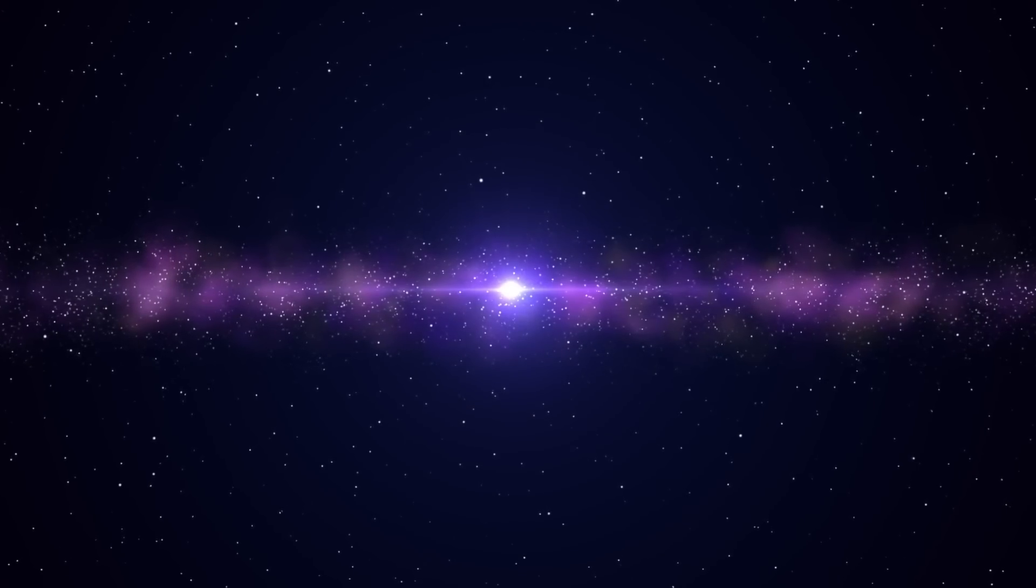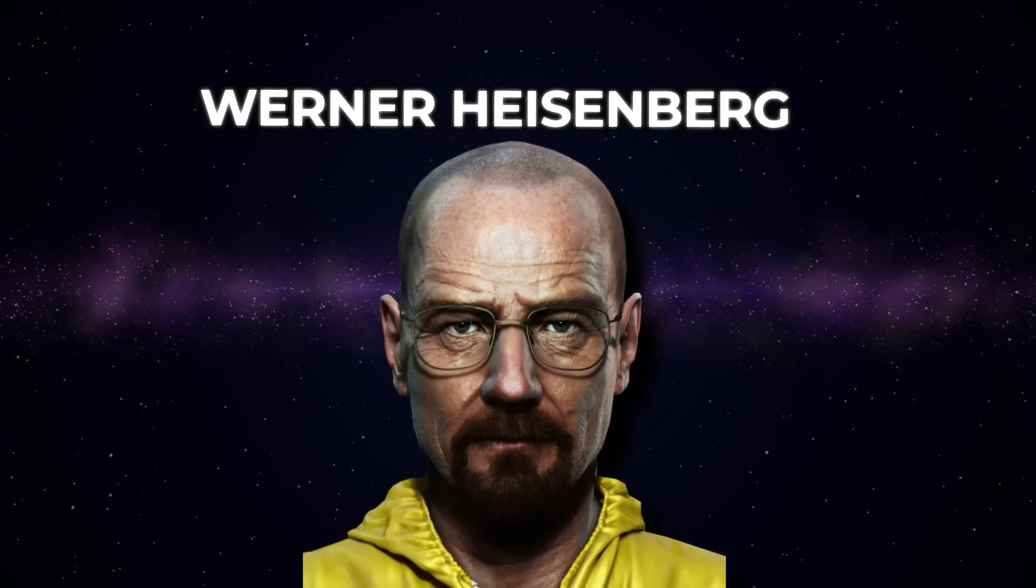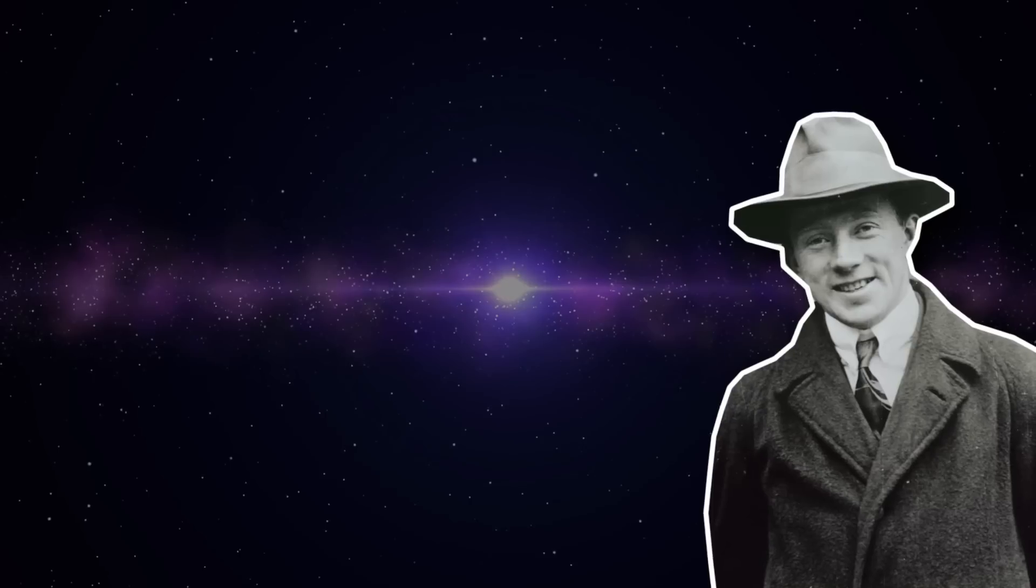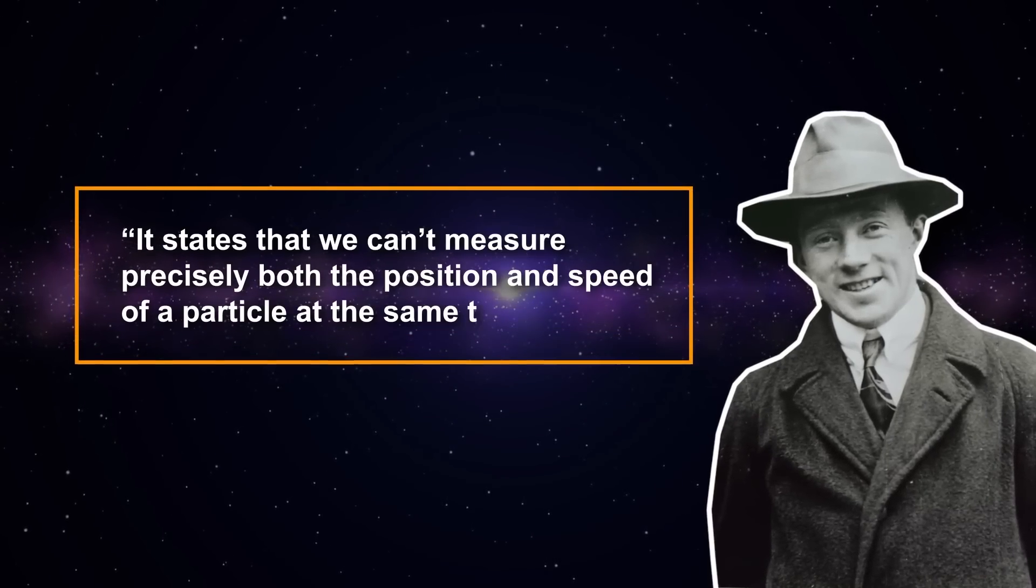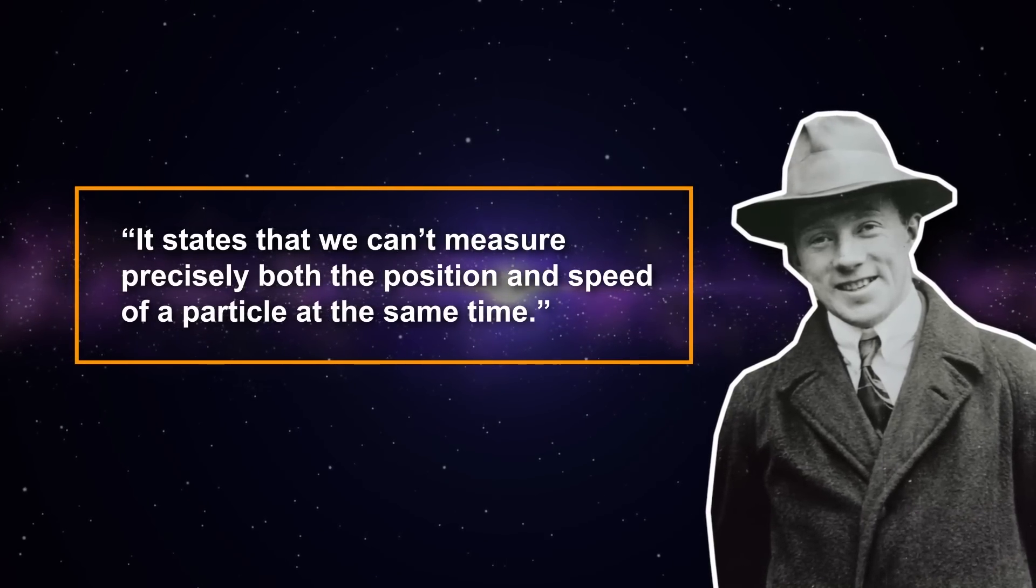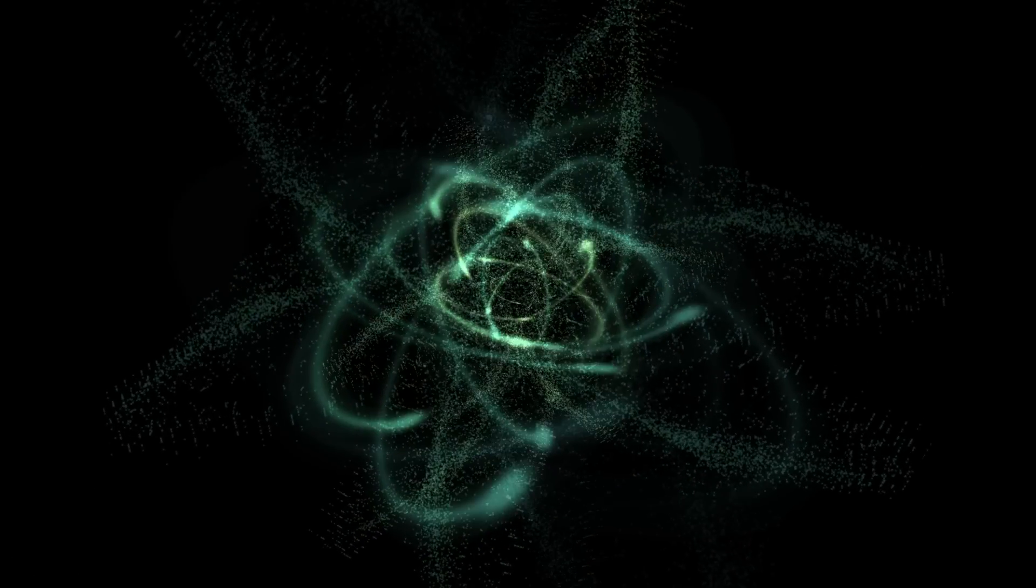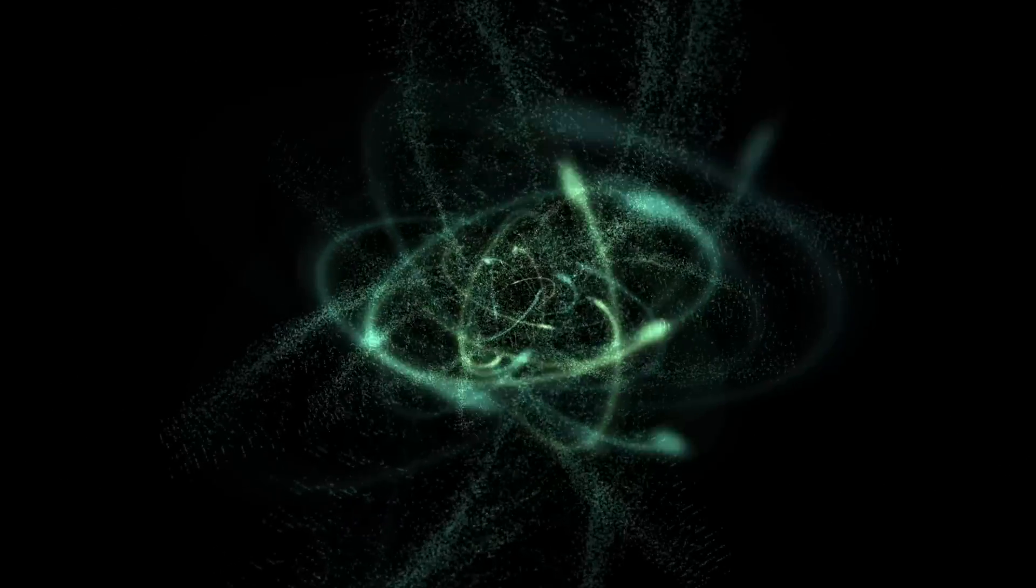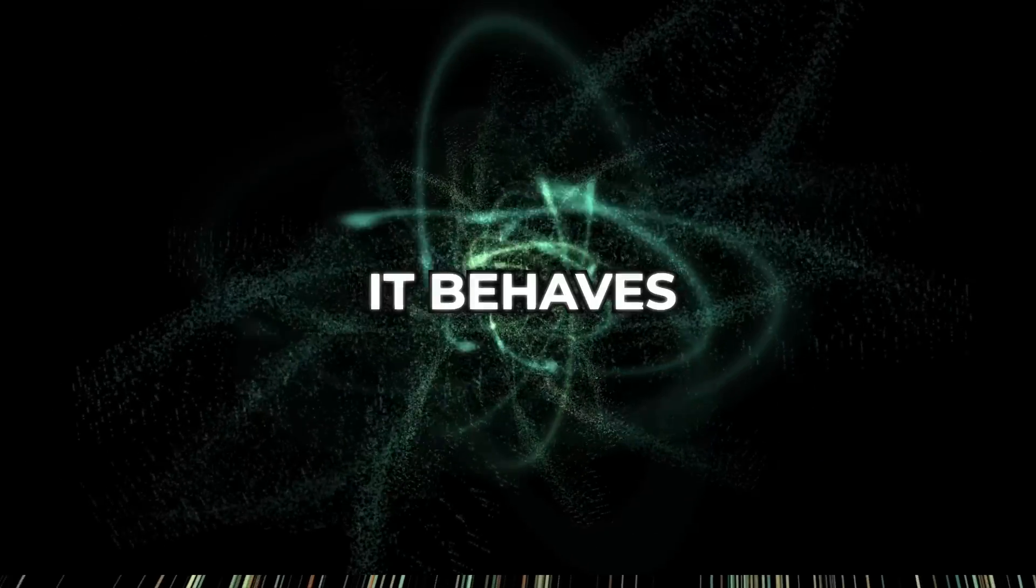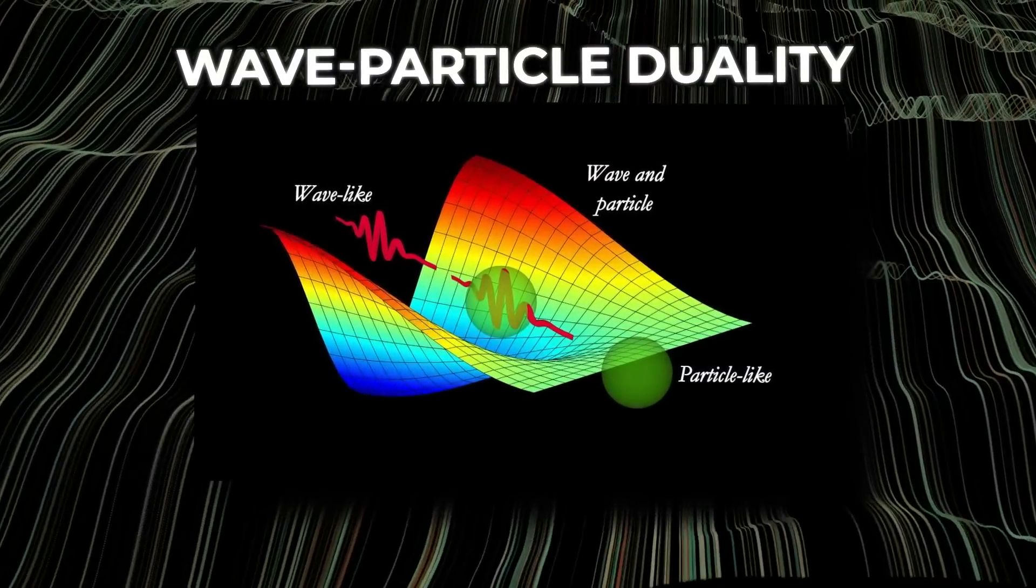The uncertainty principle was first proposed by a guy named Werner Heisenberg. No, no, no, not that Heisenberg. This one. It states that we can't measure precisely both the position and the speed of a particle at the same time. If we try to measure the location of a particle, say an electron, then it behaves more like a particle. But if we try to measure its speed, it behaves more like a wave. And this is called the wave-particle duality.